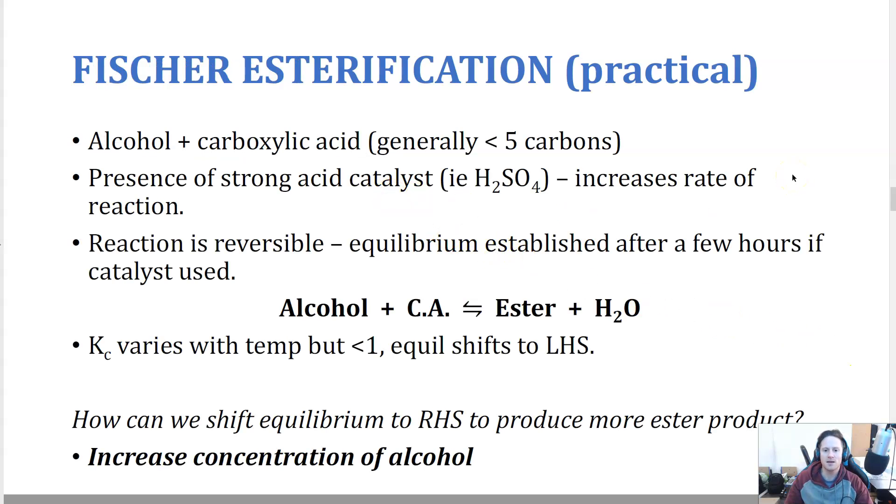In order to produce an ester, there's a chemical process called esterification or Fischer esterification. And I'll link you to another video to show this in action. Fischer esterification is the simplest method of esterification. It's better for short chain hydrocarbons. Once they get a bit bigger, this process doesn't work as well. You want a strong acidic catalyst which increases the rate of reaction like sulfuric acid. It's a reversible reaction. There's an equilibrium that's established after a few hours.